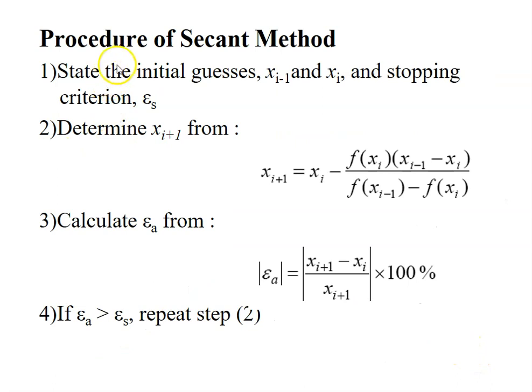So again, these are the procedure of the secant method. The first step is you need to state the initial guesses of xi and xi minus 1, the backward of the xi. And of course, the stopping criterion. And then determine the root in step 2 and so on and so on.